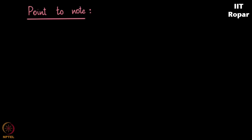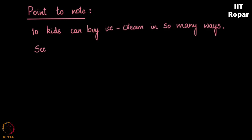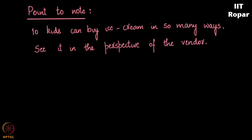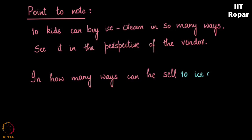I am not trying to see this question in the light of the kids — these ten kids can buy ice cream in so many ways. But I want to see it in the perspective of the shopkeeper: in how many ways can he sell ten ice creams with three flavours? There are so many ways, let us count what these ways are.